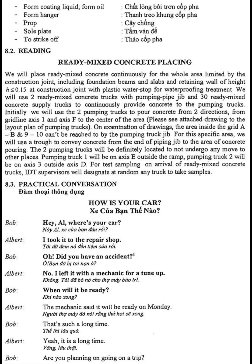On examination of drawings, the area inside grid A to B and 9 to 10 can't be reached by the pumping truck jib. For this specific area, we will use a trough to convey concrete from the end of the piping jib to the area of concrete pouring. The two pumping trucks will be definitely located so as not to undergo any move to other places. Pumping truck 1 will be on axis E outside the ramp. Pumping truck 2 will be on axis 3 outside axis D.